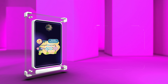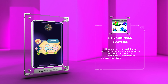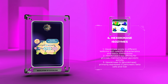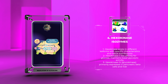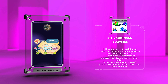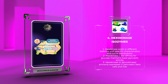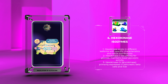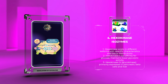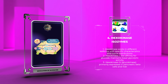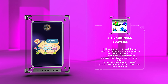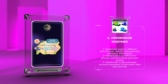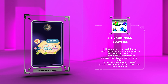Hexokinase exists in different isoforms, each with specific characteristics and tissue distributions. Hexokinase I, found mainly in the liver, has a low affinity for glucose and is responsible for maintaining basal glycolytic activity. In contrast, hexokinase IV, or glucokinase, is primarily expressed in the pancreatic beta cells and the liver. Glucokinase has a high Km for glucose, allowing it to function efficiently even when glucose levels are elevated, such as after a meal. The differential expression and kinetic properties of hexokinase isozymes contribute to tissue-specific regulation of glycolysis.